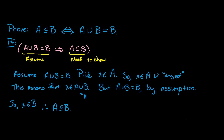Since X was arbitrary, A is a subset of B. This completes the proof: in the previous part we showed A is a subset of B implies A union B equals B, and now we've shown A union B equals B implies A is a subset of B. We've shown both directions, and therefore the claim is proved.